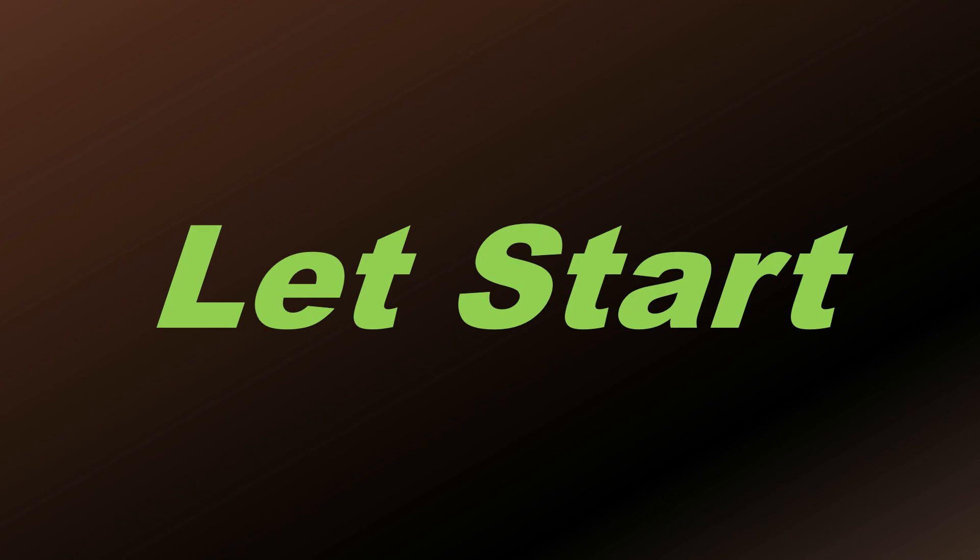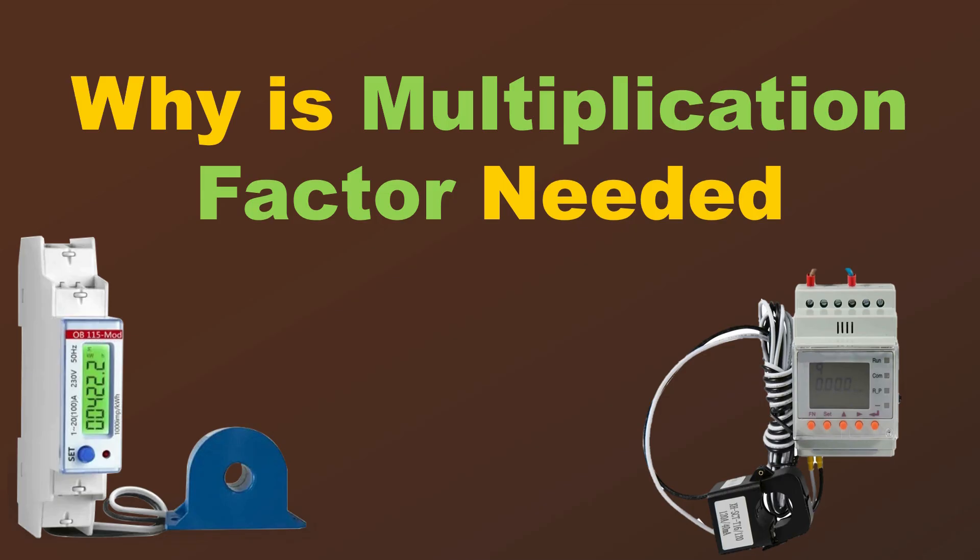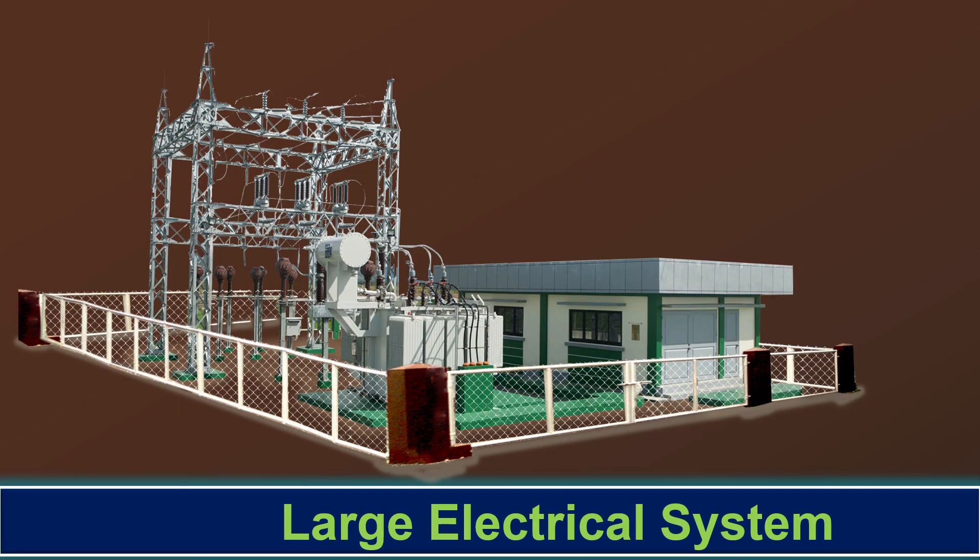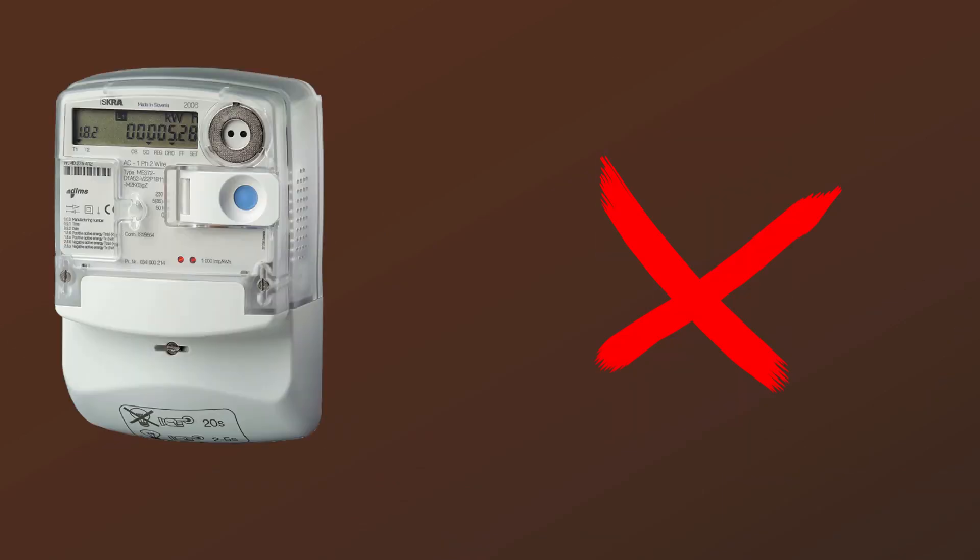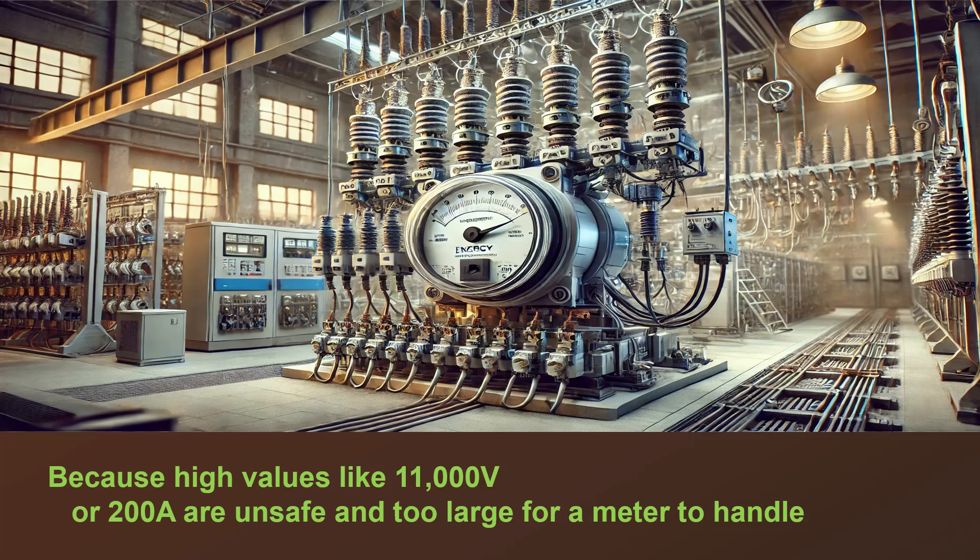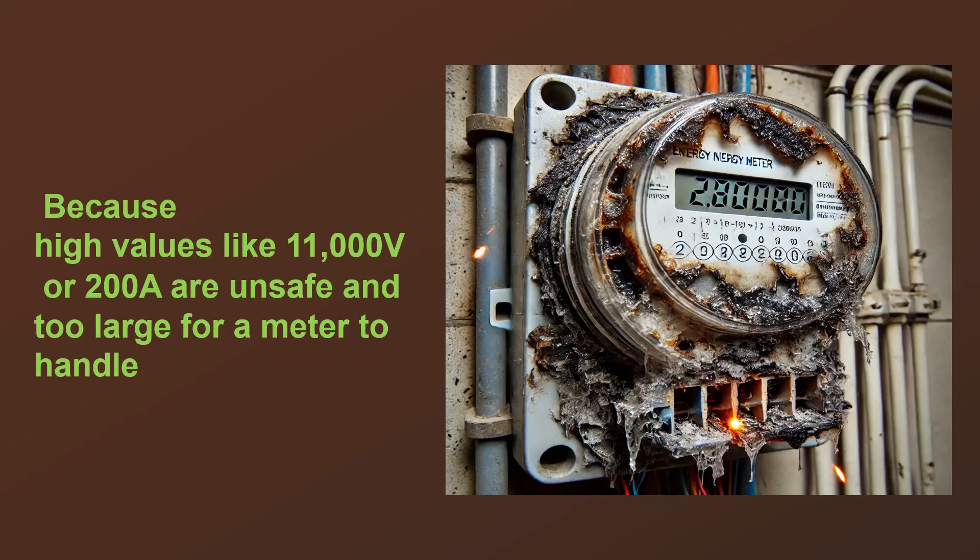Why is multiplication factor needed? In large electrical systems, the energy meter doesn't measure actual voltage and current directly. Why? Because high values like 11,000 volts or 200 amperes are unsafe and too large for a meter to handle.